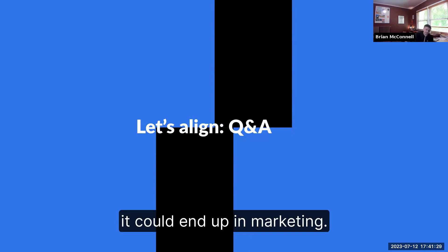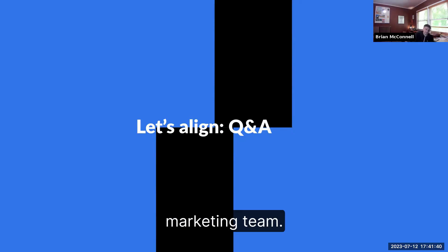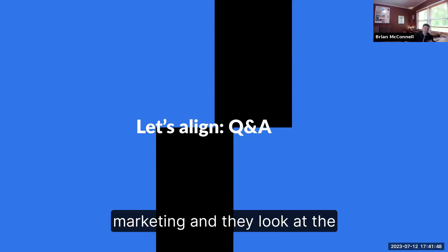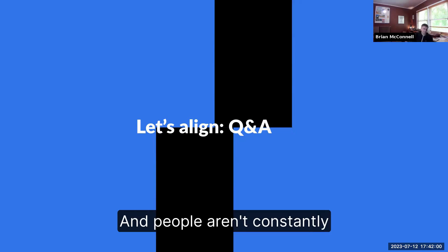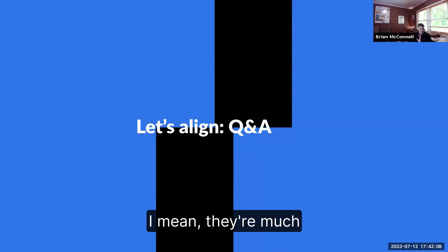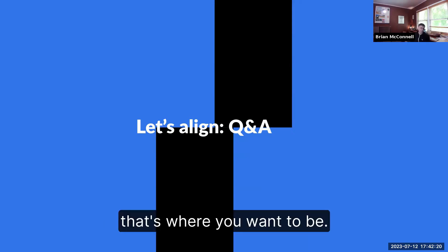One of the most important questions to resolve is where the localization team is going to live within the company. It's really kind of an oddball function — it could end up in product, engineering, or marketing. My experience has been that it's really important to be in a part of the company that's focused on growth. At Notion, we're part of the marketing team, even though we're fairly technical and work closely with engineering. We ultimately roll up to marketing, and they look at the spend on localization the same as running billboard advertising — it's a growth lever. Because of that, it's adequately resourced and people are asking about ROI, not about reducing per-word prices. That's where you want to be, not in an organization that views localization as a cost center.